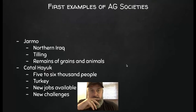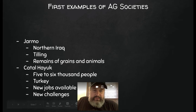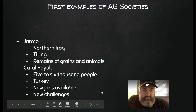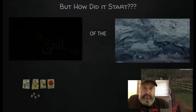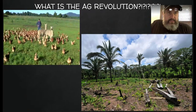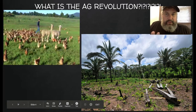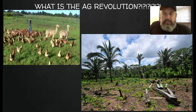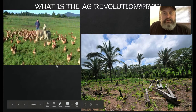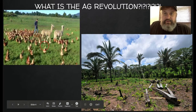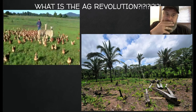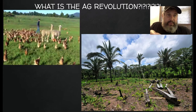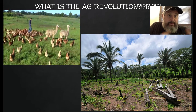The agricultural revolution included not just growing crops but also the domestication of animals. They started to domesticate animals, figuring that if they penned them up rather than finding them in the wild, they could raise them for food.